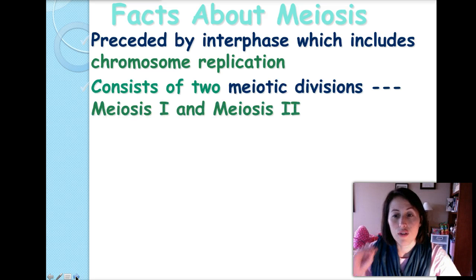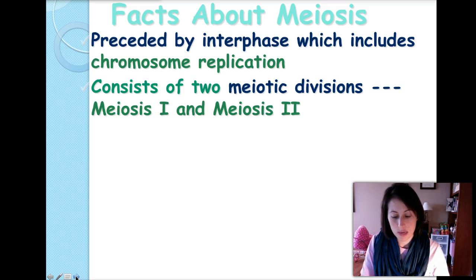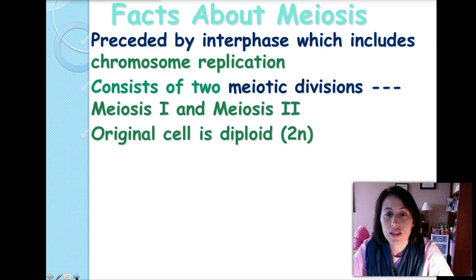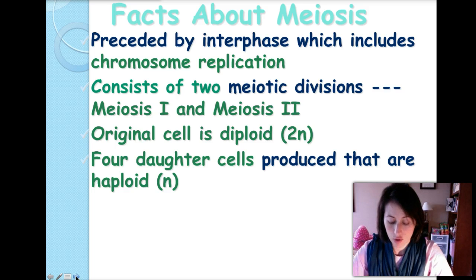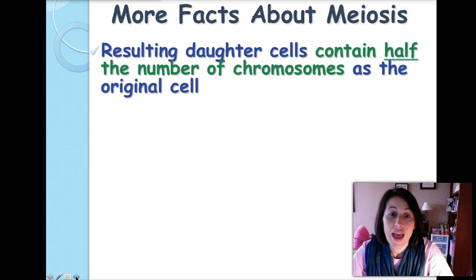Meiosis consists of two divisions, not just one. It goes through a whole series of divisions through the first part and then divides again in the second part. The original cell starts out as diploid — a 2n cell with two sets of chromosomes — and at the end we get four daughter cells that are haploid, each with one set of chromosomes.